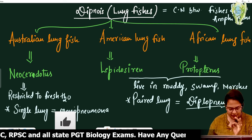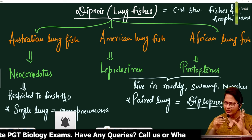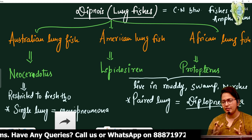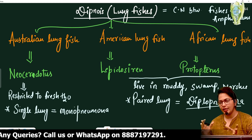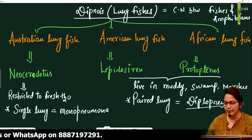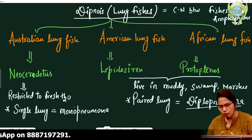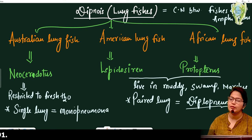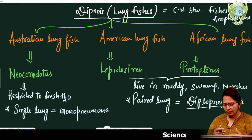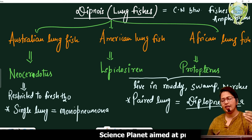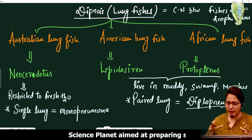The first thing is that their distribution is discontinuous distribution and endemic. Discontinuous distribution and endemic means that they are not found continuously — they are found only in particular areas.